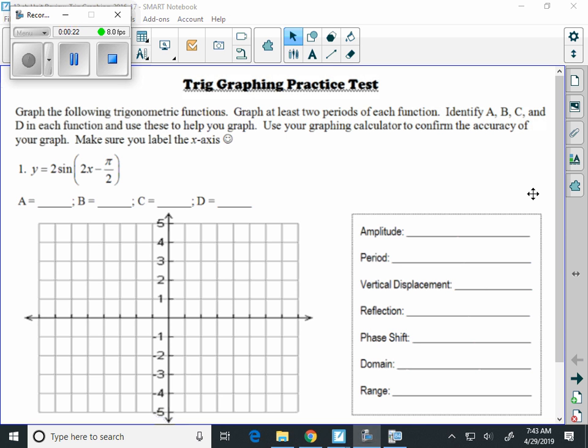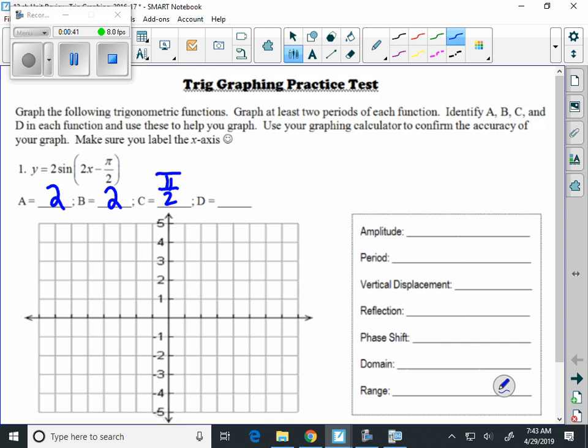y equals 2 sine of 2x minus pi over 2. Well, A is 2. It's the number in front of the trig function. That's where that 2 comes from. And then B is the 2 in front of the x. C is pi over 2. And we don't have a D in this one. Sometimes people write 0 there.